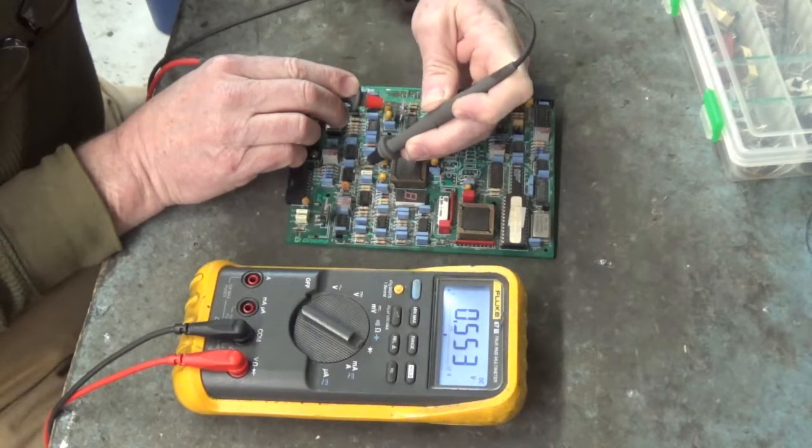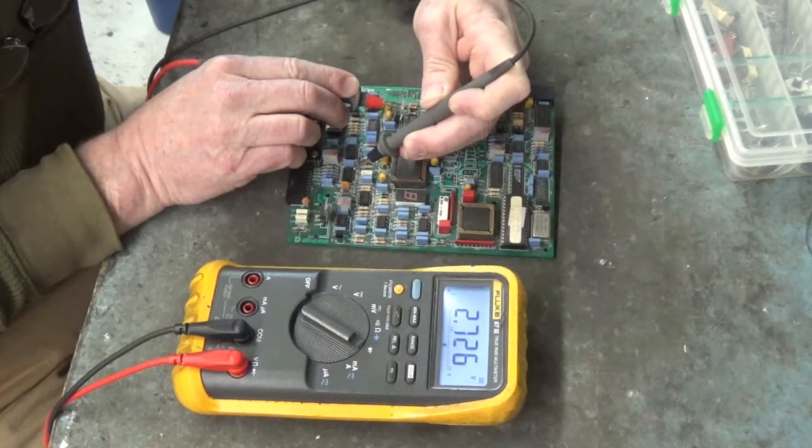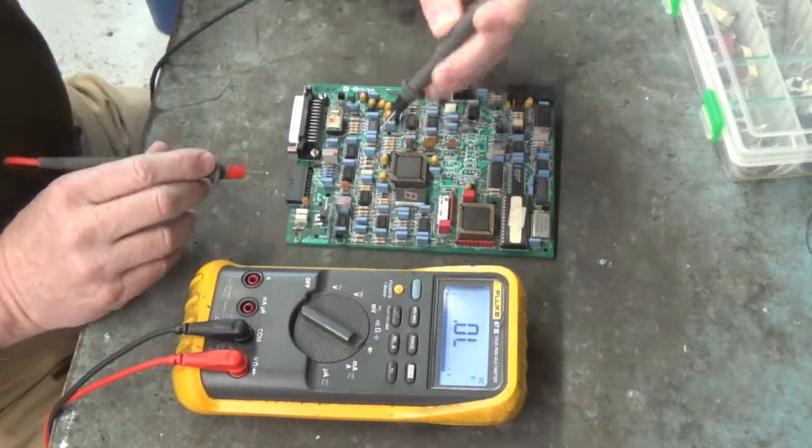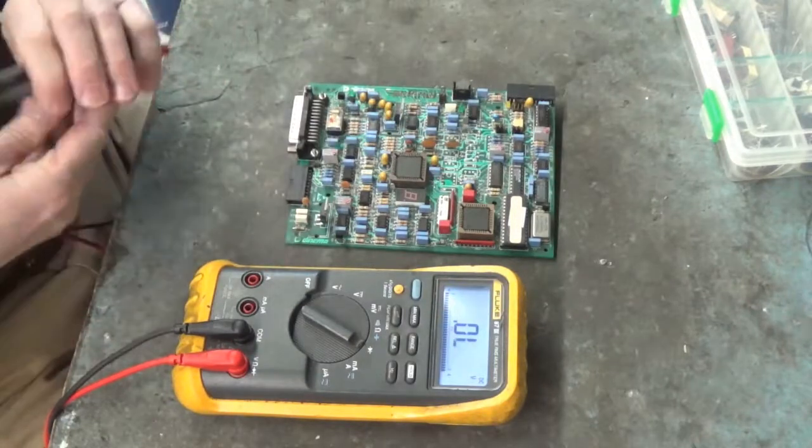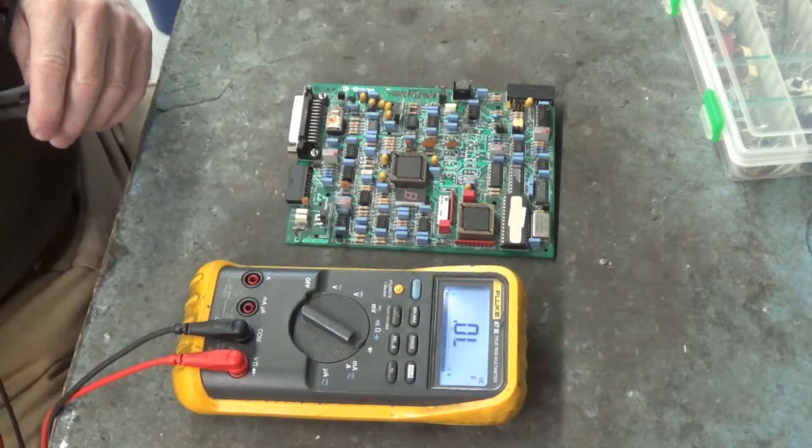Pin six, 1.225. Check pin five again, yep it's still open. Pin seven, 0.553. Pin eight, 2.726. Nobody's shorted but they sure did measure higher than that TL071.